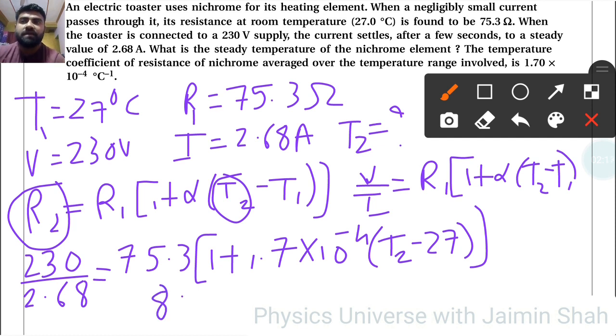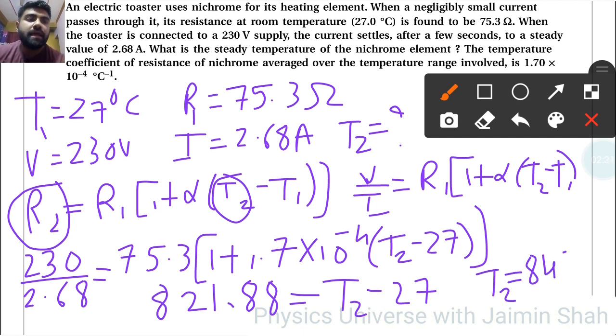This gives 821.88 equals T2 minus 27. Adding 27, we get T2 equals 848.9°C. This is the steady temperature of the nichrome element.